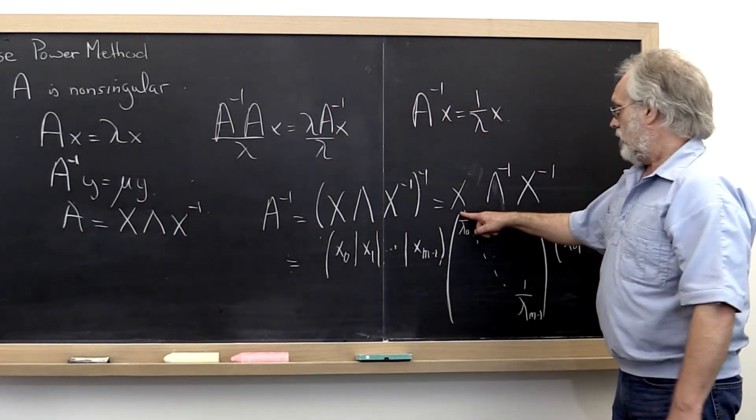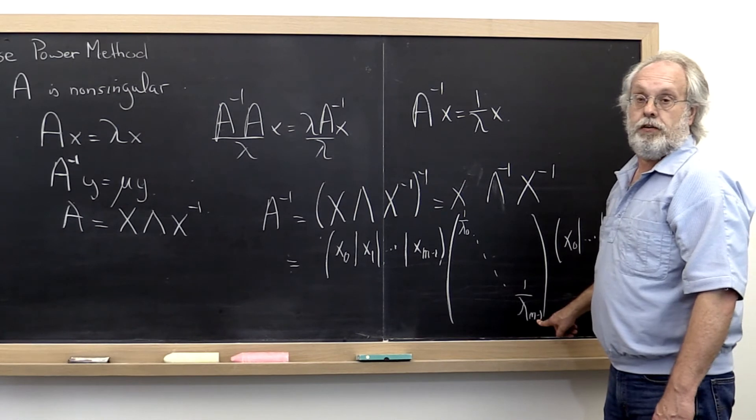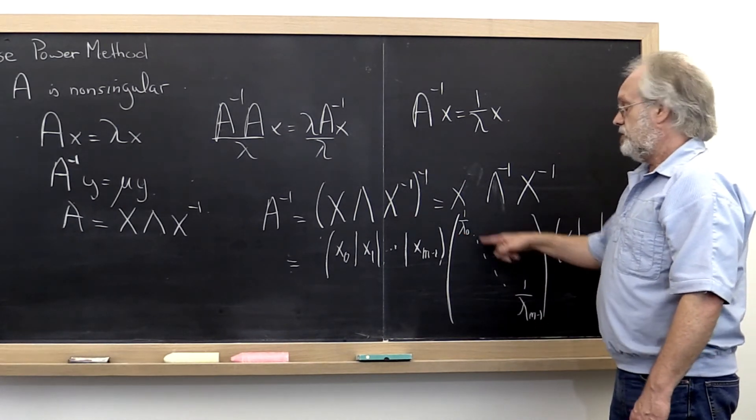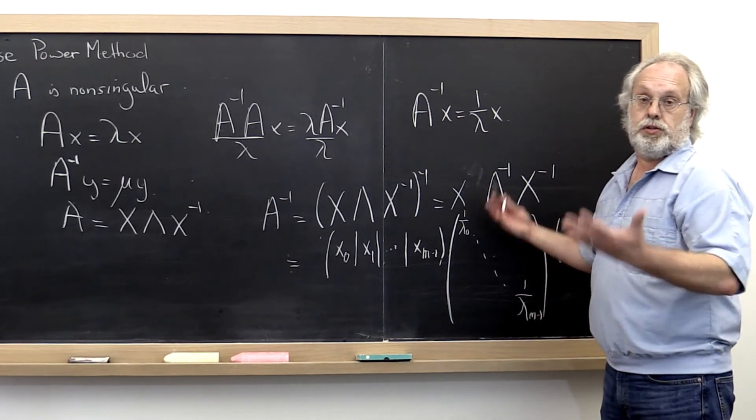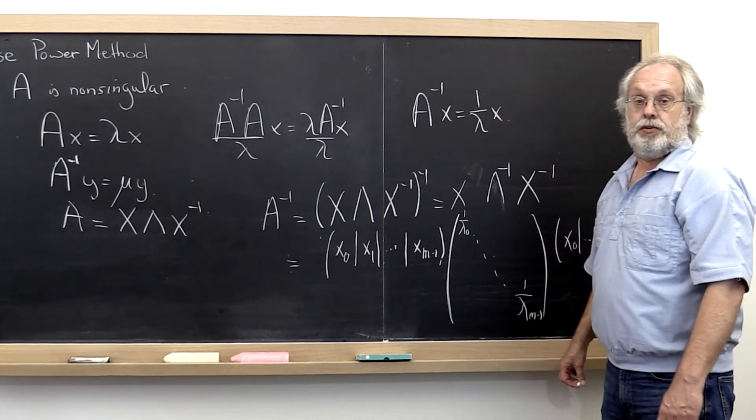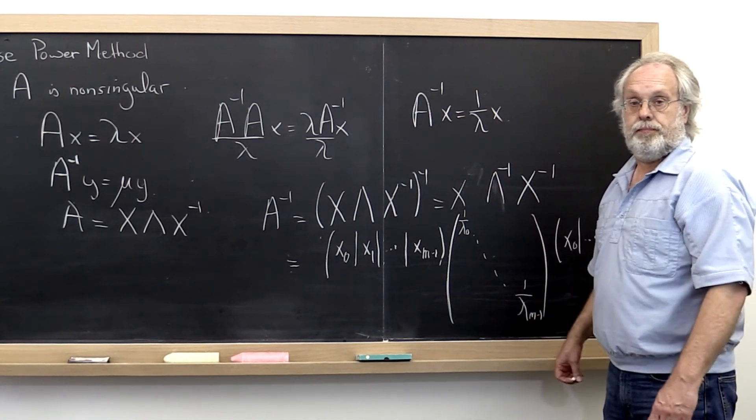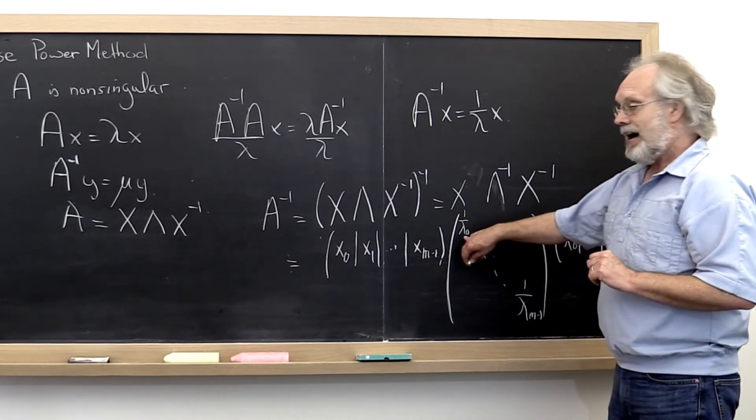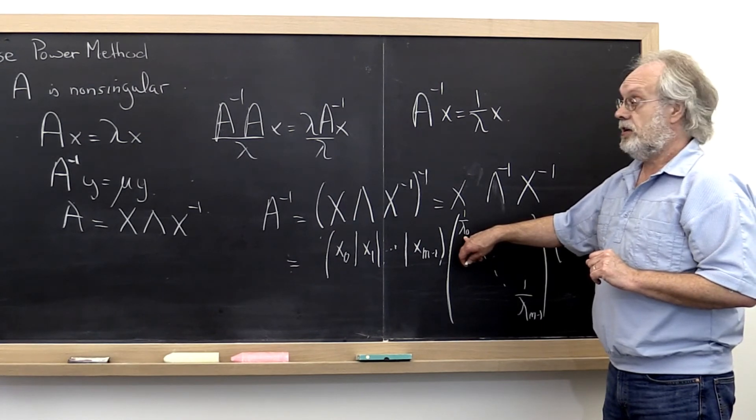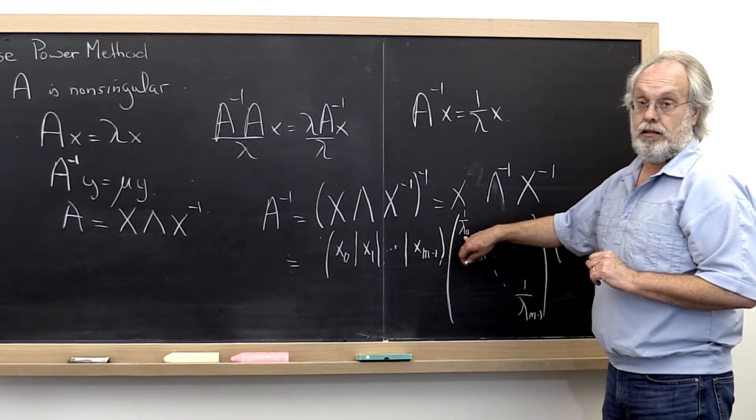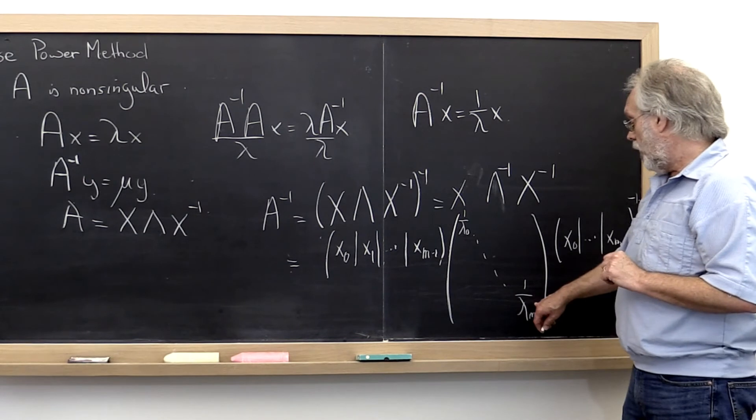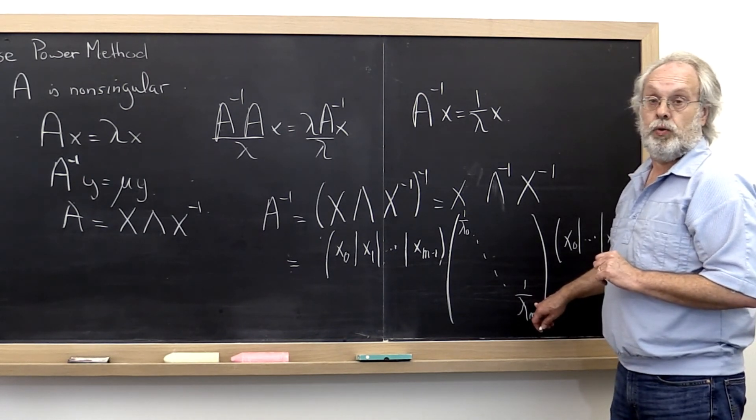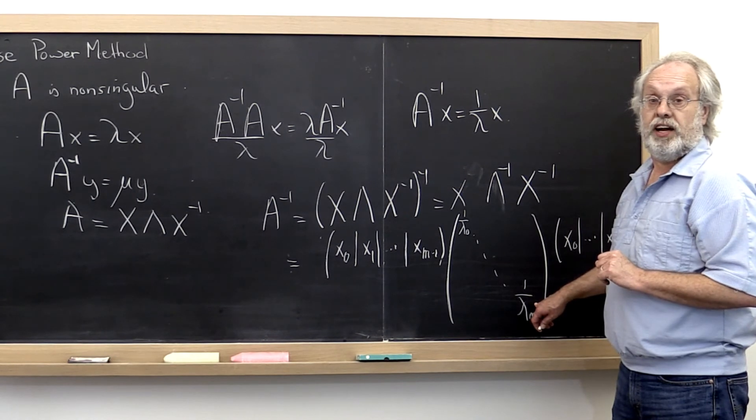And therefore, if we look at the spectrum for matrix A, the spectrum for matrix A inverse is just given by the reciprocals of the eigenvalues of matrix A. Now importantly, if lambda 0 was the eigenvalue largest in magnitude of A, then it is 1 over lambda M minus 1 that is the eigenvalue largest in magnitude for A inverse.